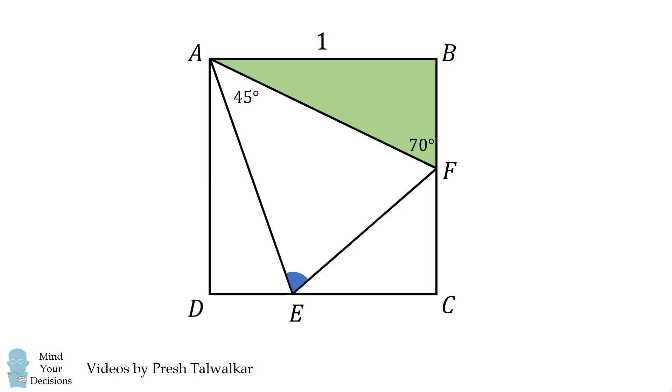First consider triangle ABF. Since angle B is a 90 degree angle, angle FAB must be equal to 20 degrees. Then consider triangle ADE. Since angle A is a 90 degree angle, angle DAE must be equal to 25 degrees. Then since angle D is a 90 degree angle, angle AED must be equal to 65 degrees.